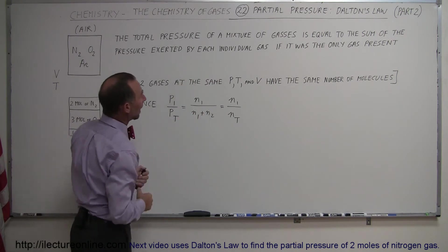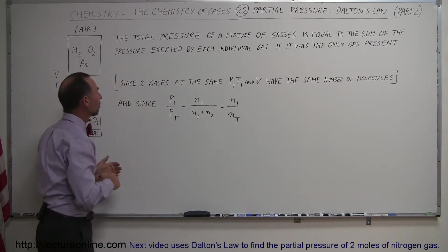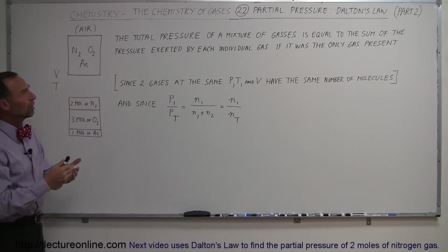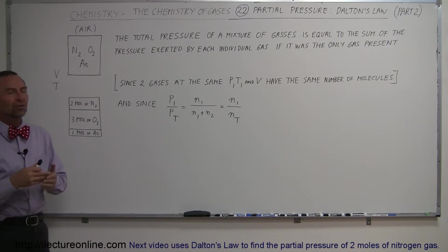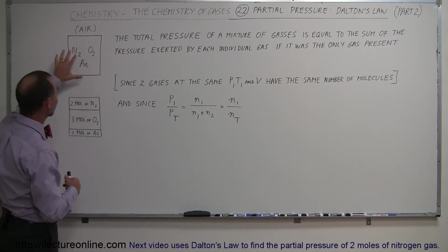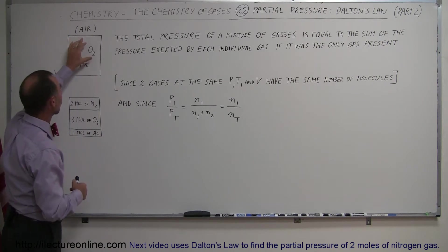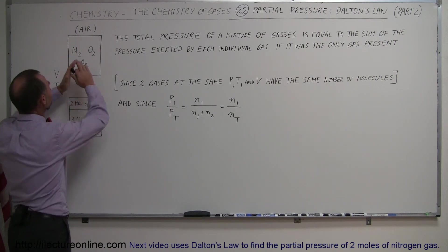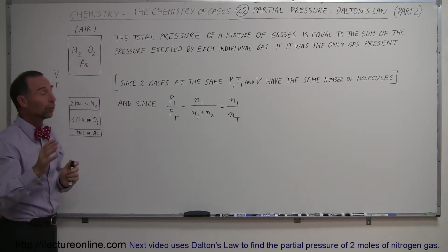The total pressure of a mixture of gases is equal to the sum of the pressure exerted by each individual gas if it was the only gas present. In other words, if you have a mixture of gases, the partial pressure of each gas together forms a total pressure.